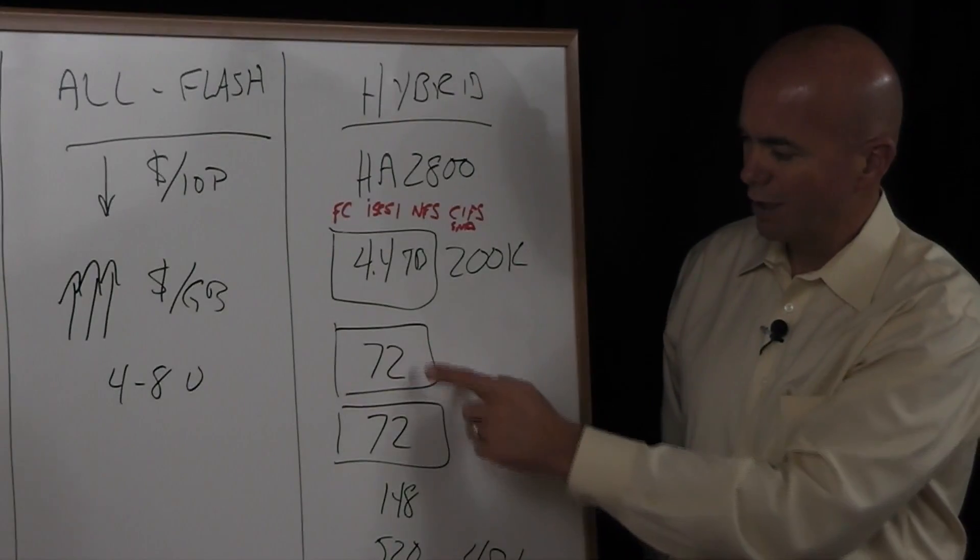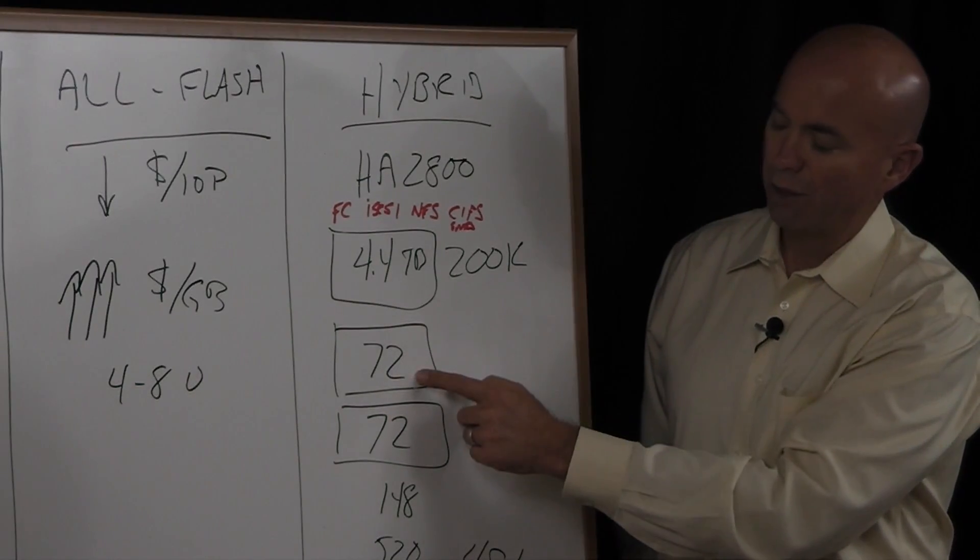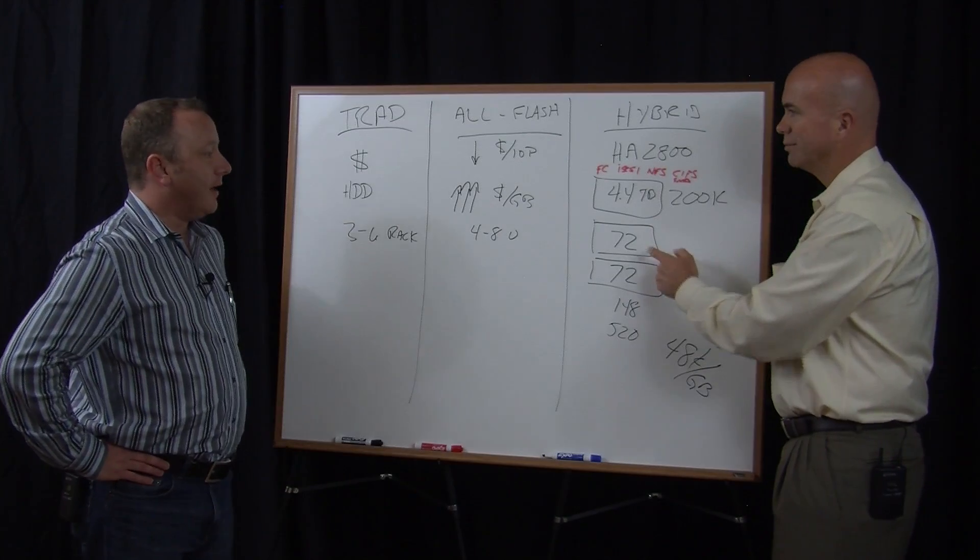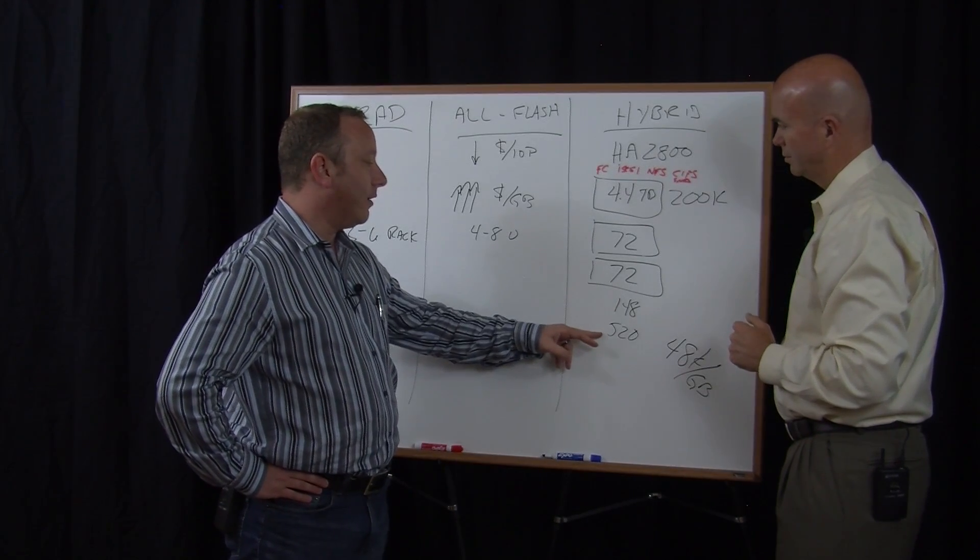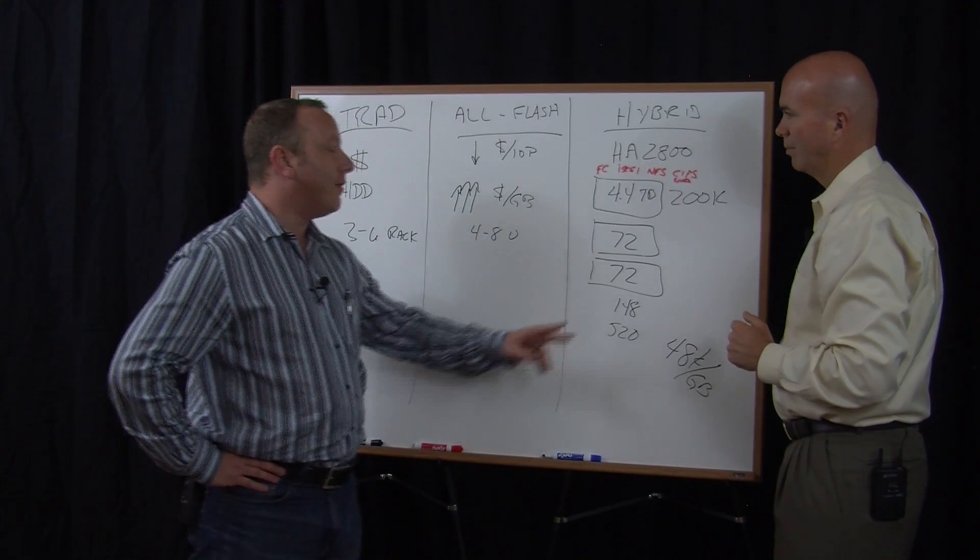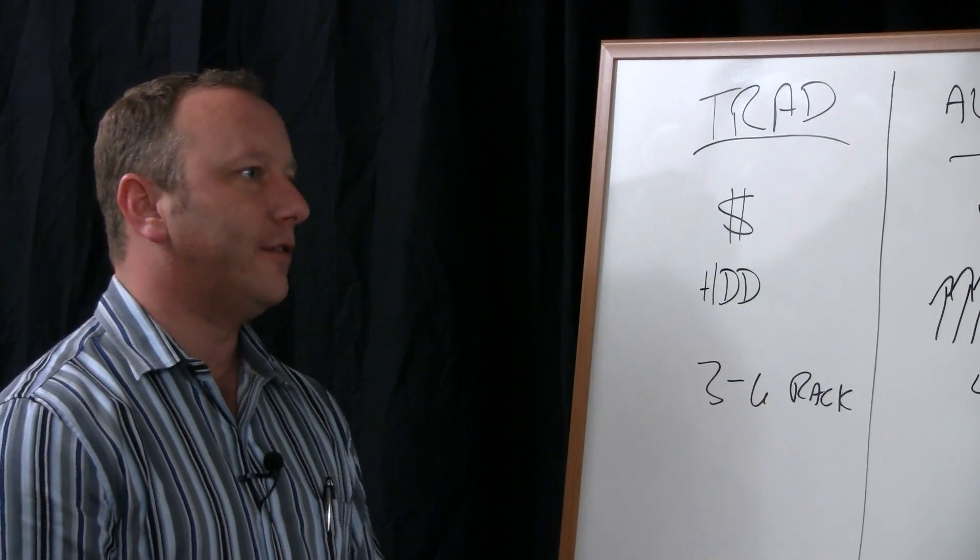Right. So even though these are inexpensive already, if you can get the dedupe and compression for free, why not? And that's how we get this 148 terabytes to yield what I like to call an effective 520 terabytes on average. That's a three and a half X ratio.